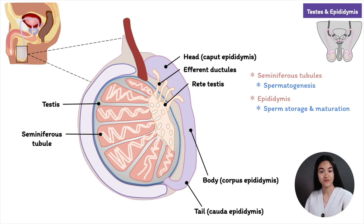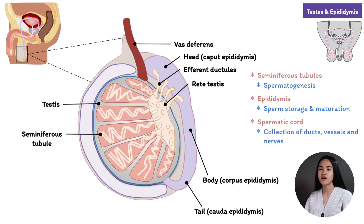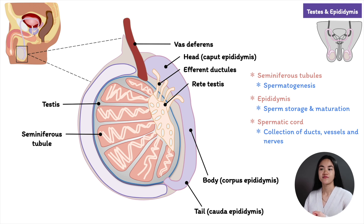Before moving on to the vas deferens, let's quickly talk about the spermatic cord. The vas deferens, blood vessels, and nerves supplying the testes are bound together in the spermatic cord — it's a collection of ducts, vessels, and nerves that run to and from the testes. They are surrounded by fascia, which gives it that cord-like structure. It contains the testicular artery, artery to the vas deferens, nerves, and of course the vas deferens, which is the duct that transports sperm to the ejaculatory duct.